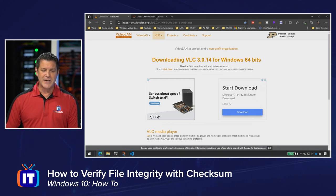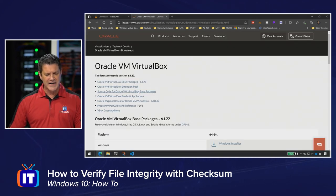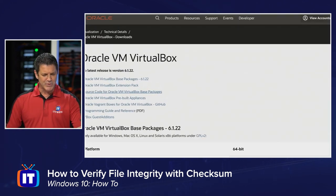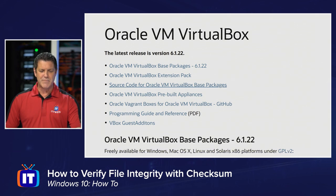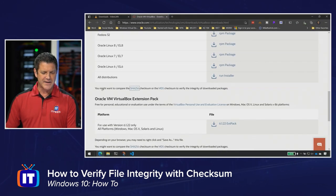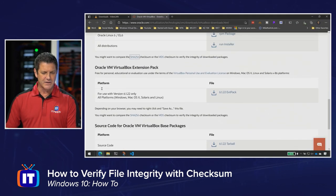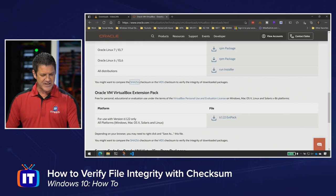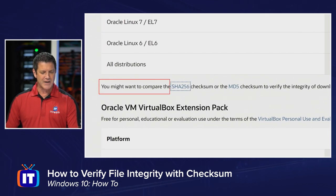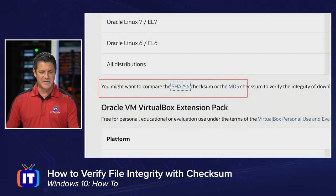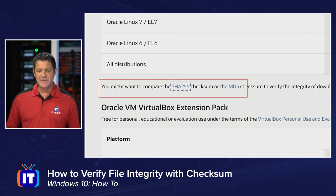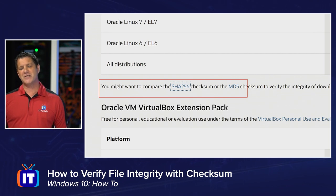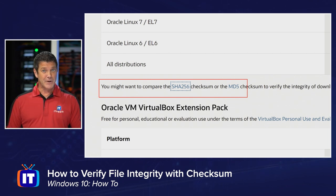This was VideoLAN Organization. If I go over to Oracle VirtualBox, for example, they've got their VirtualBox and many different downloads. If I scroll down, I'll find a little link that says you might want to compare the SHA-256 or the MD5 checksums to verify the integrity.